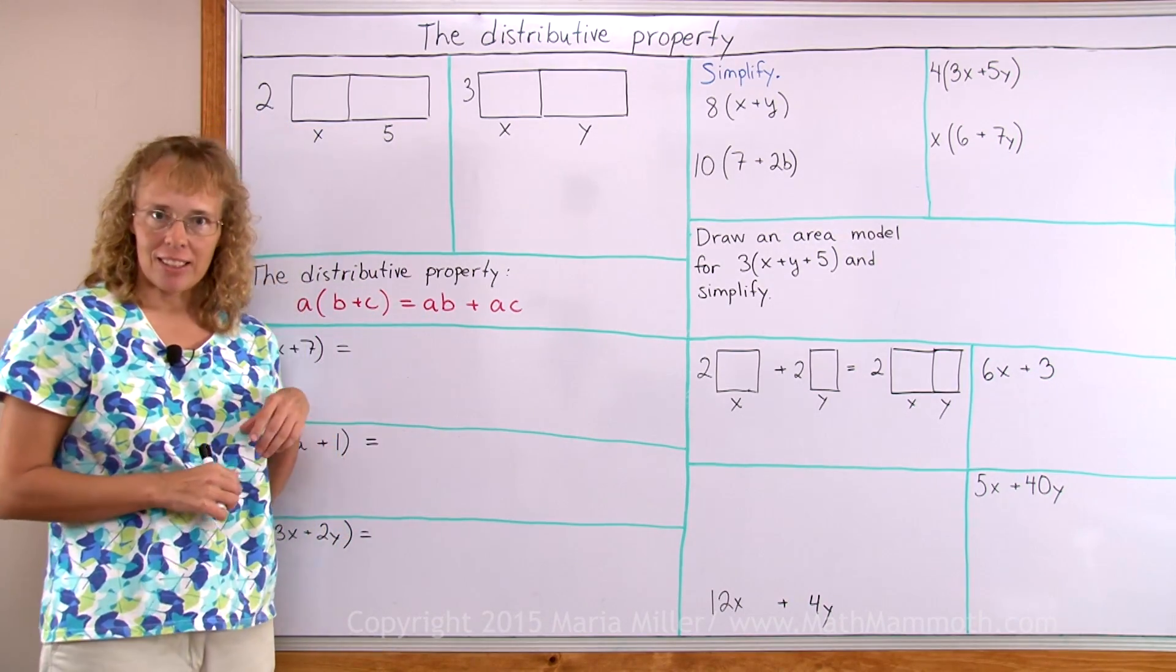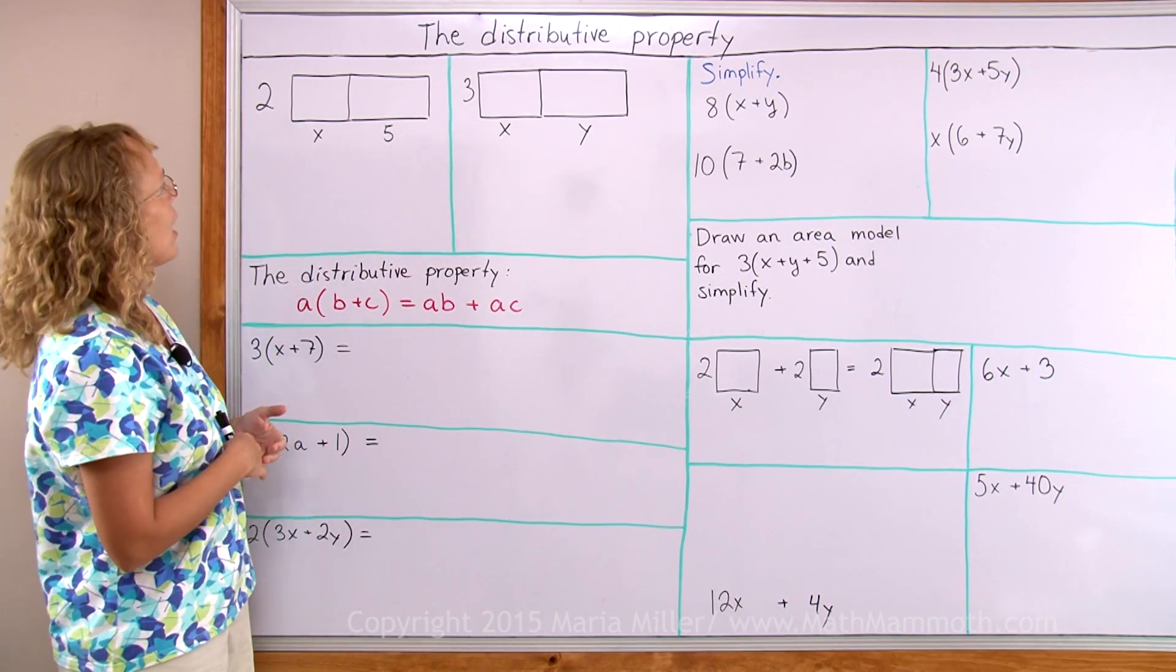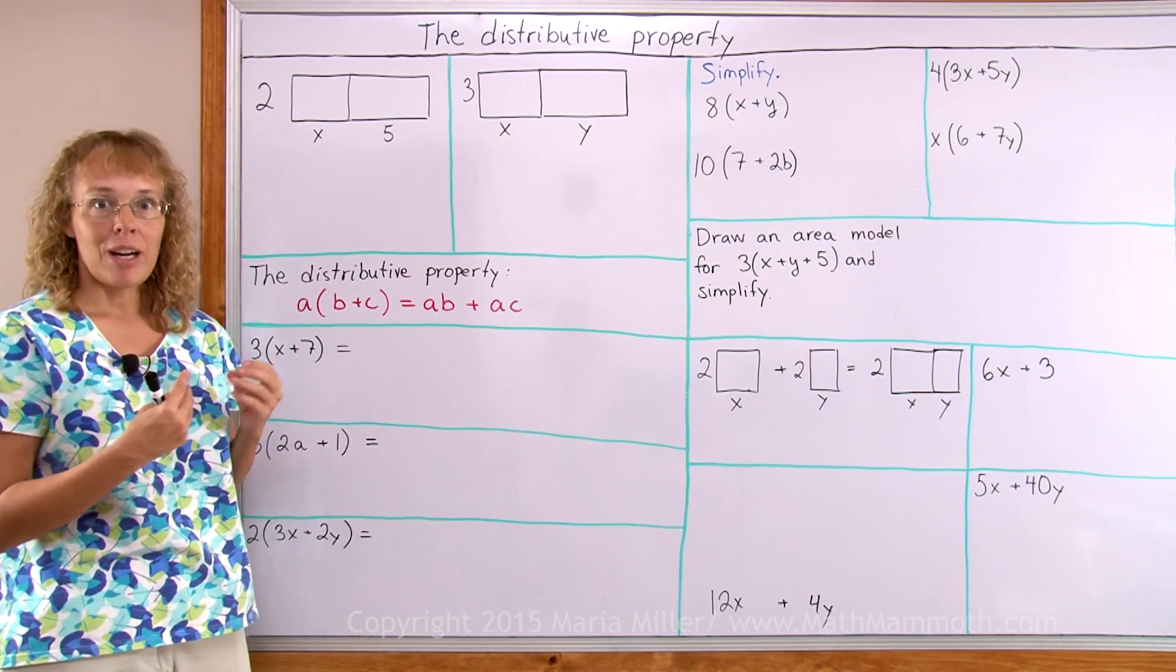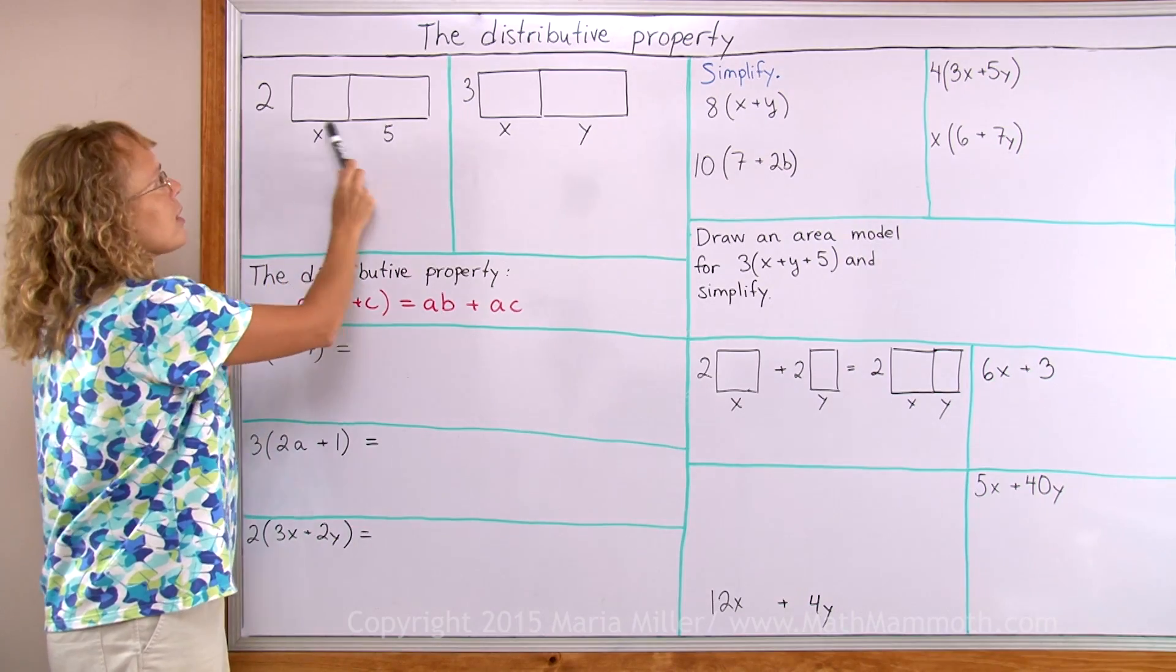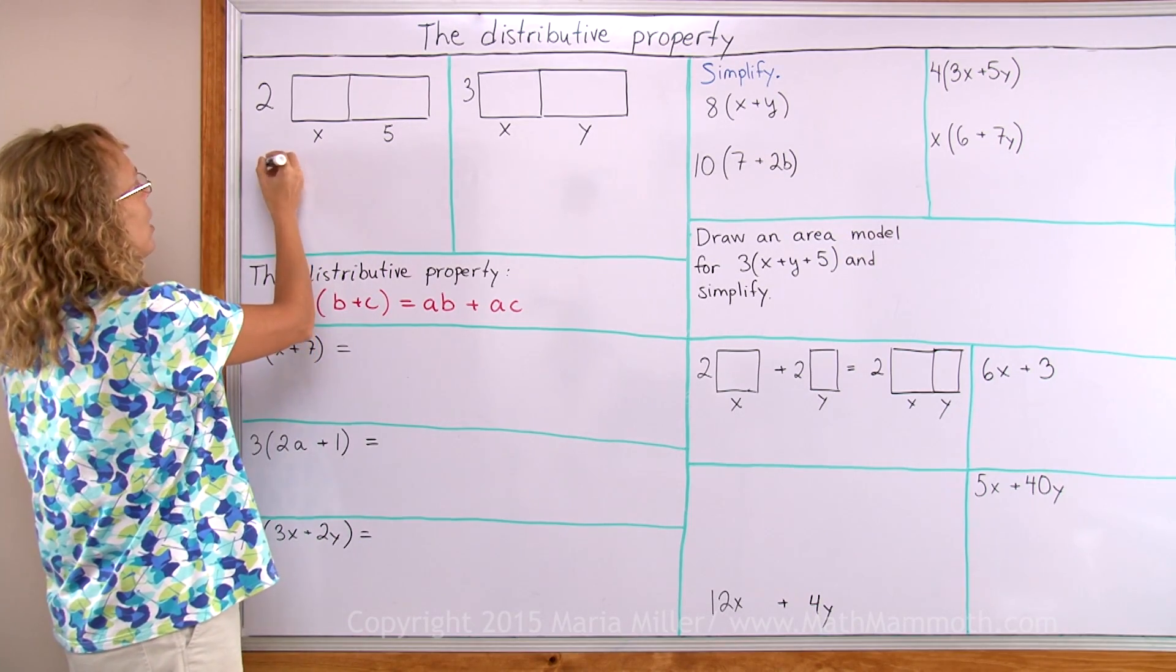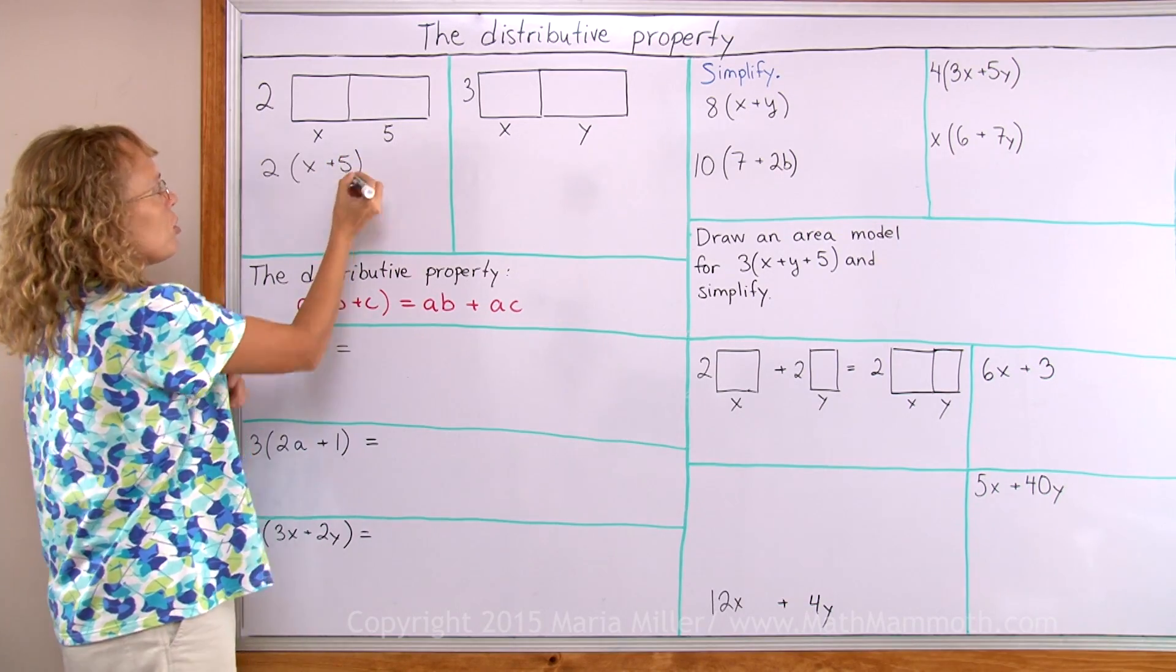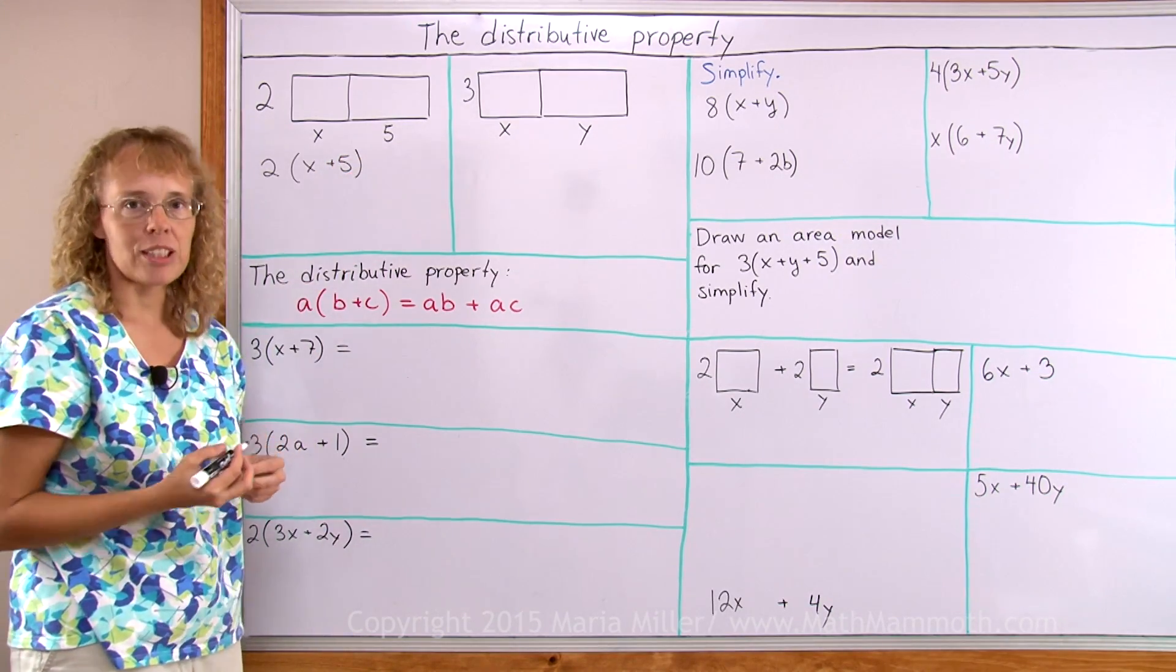First I want to show you these rectangles. It's an area model for the distributive property. I can think of this in two ways. I can think of it as one big rectangle where one side is 2 and then this side is x plus 5. So the area of the rectangle would be therefore 2 times x plus 5, or 2 times the quantity x plus 5, or 2 times the sum of x plus 5.